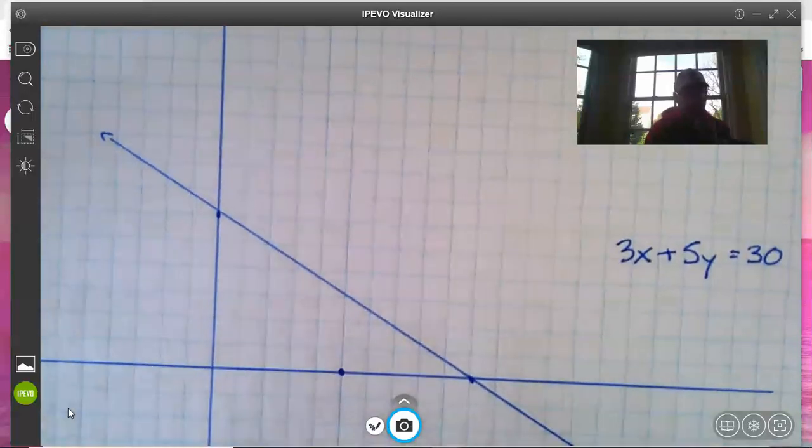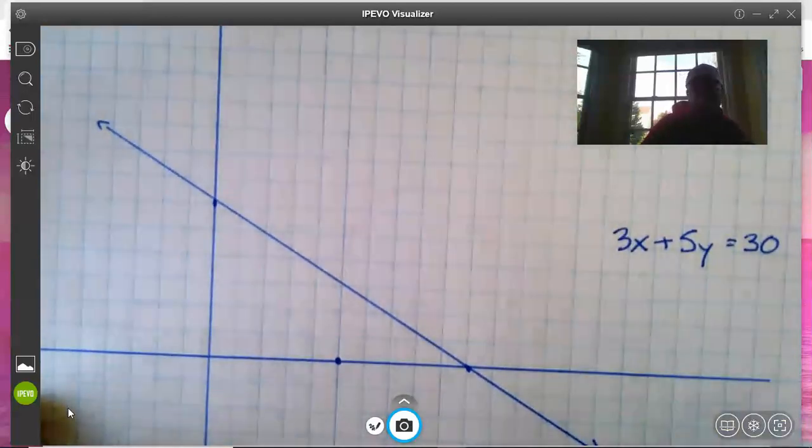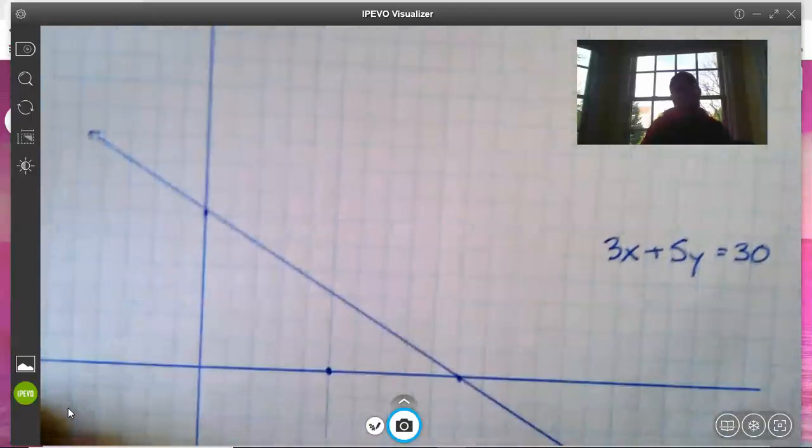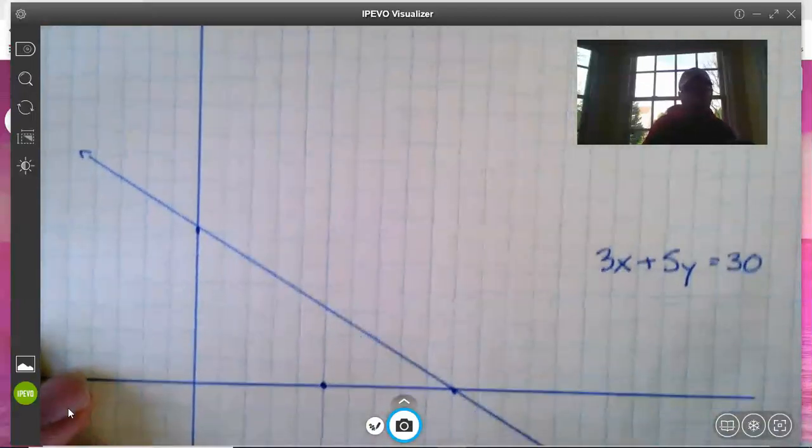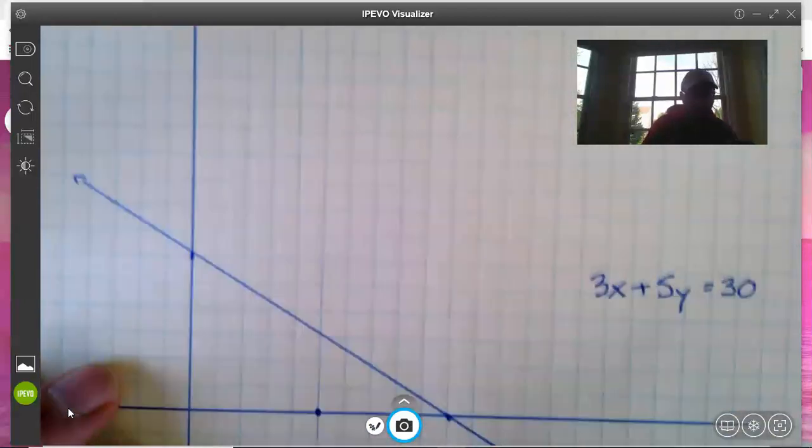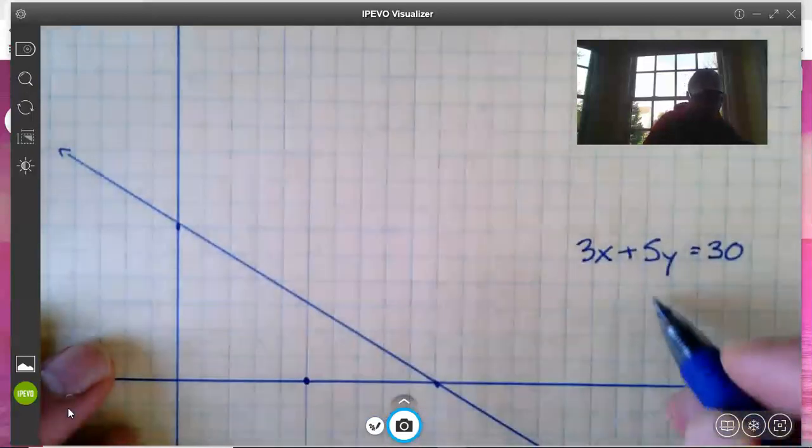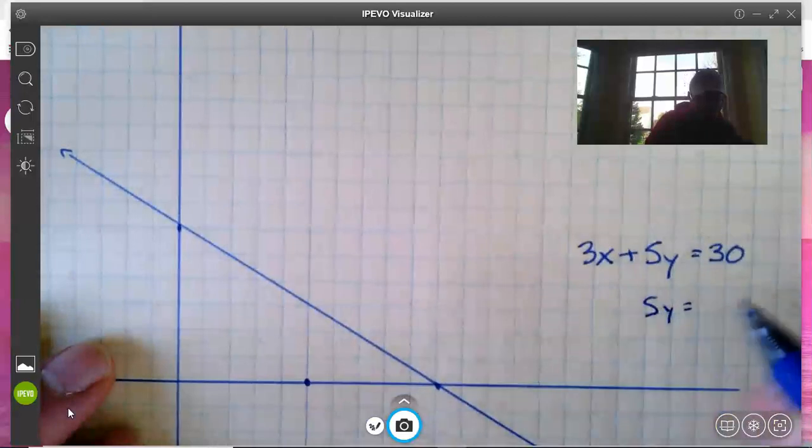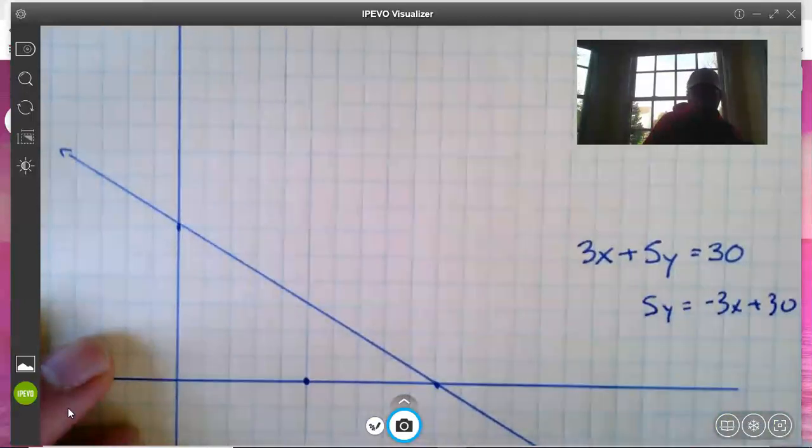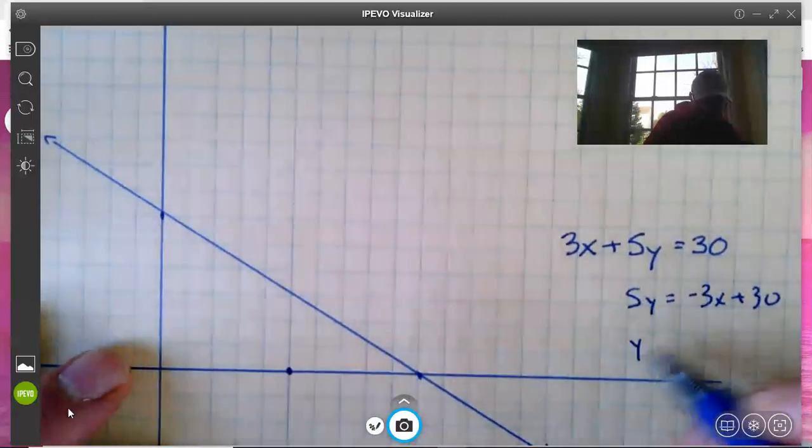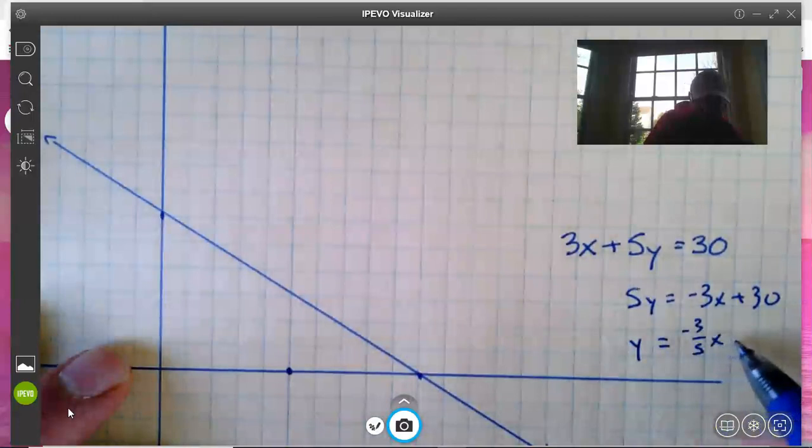All right, here we have the line 3x + 5y = 30. Remember, in order to graph this line we can do one of two things. We could either rewrite it in y = mx + b form, so it would be 5y = -3x + 30, and then divide both sides by 5: y = -3/5x + 30.